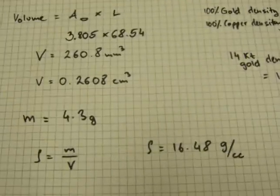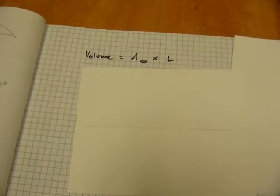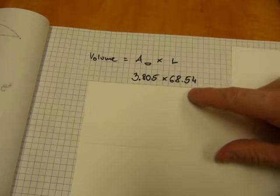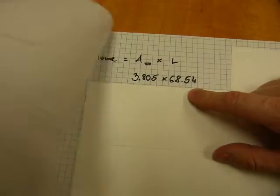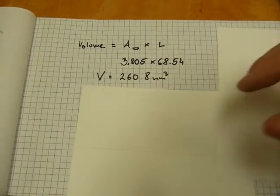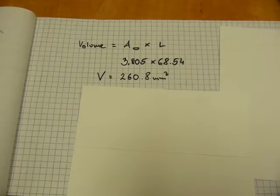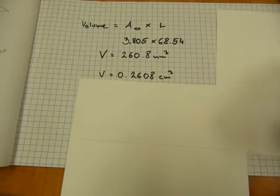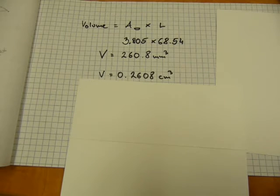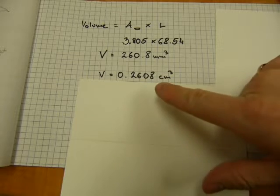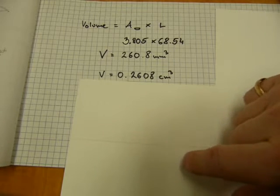Like I said the volume of anything is the length times the area of its cross section. The cross section was 3.8, the length was from the first page 68.5 which was that number there. I worked with more digits you can see for a most accurate calculation. So length times area equals 260.8 square millimeters. This is nice, I need cubic centimeters. There it is, shift the decimal dot three places over from cubic millimeters to cubic centimeters. And there you have it, it's about a quarter of a cubic centimeter of gold to make this ring.